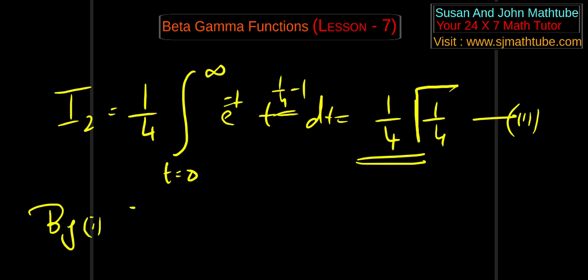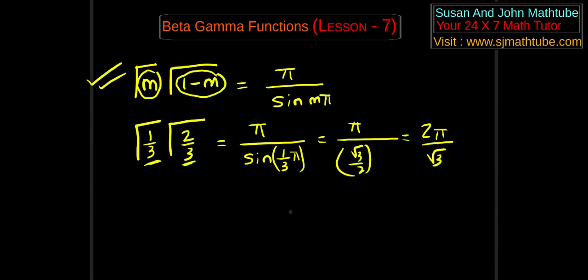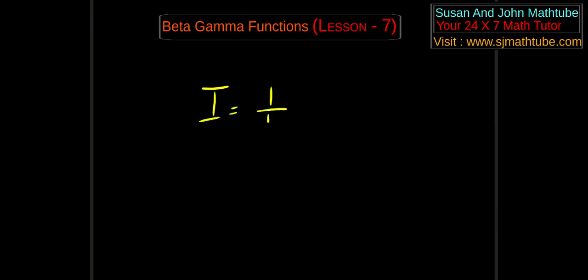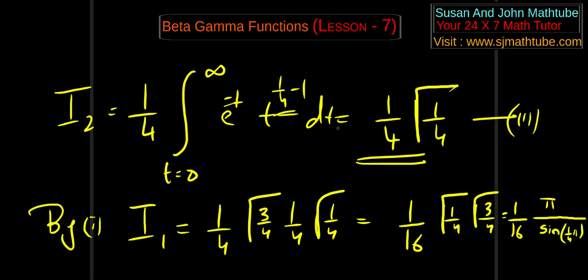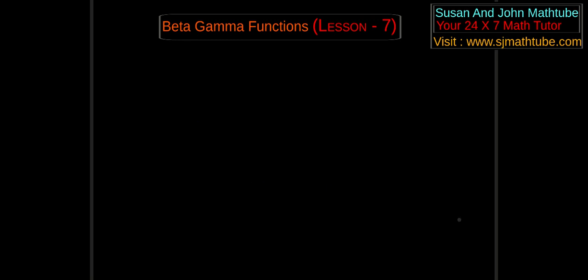Now I = i1 · i2 = (1/4)γ(3/4) · (1/4)γ(1/4) = (1/16) · γ(1/4) · γ(3/4). The sum of the arguments is 1, so applying the formula: this equals (1/16) · π / sin(π/4) = (1/16) · π / (1/√2) = π/(16/√2) = π/(8√2).